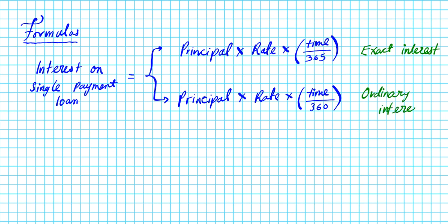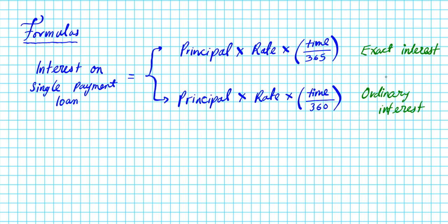If you take a look at these formulas, can you see the difference? The difference is the denominator of the time calculation. For exact interest you divide by 365, which is exactly how many days there are in a year. With 360, you're 5 days short. The problem you're solving will tell you exactly which kind of interest you are to compute.